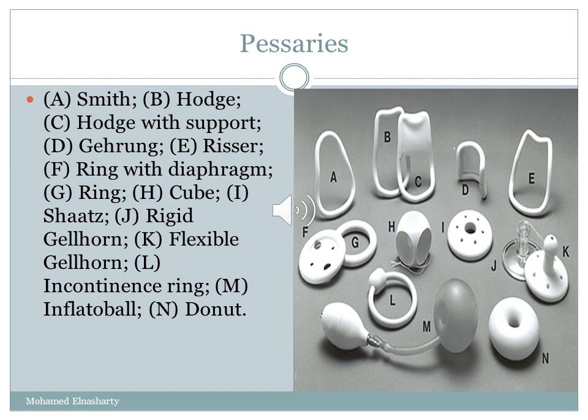There are different types of pessaries, each with different mechanisms of action, and fitting is a matter of trial and error. When the woman presents to the clinic, you start by deciding which type and size of pessary to use, based on the strength of the pelvic floor muscles and whether or not she still has a uterus. You then try different sizes and types until you reach the proper one for the patient. It is important to counsel the patient about this process beforehand.